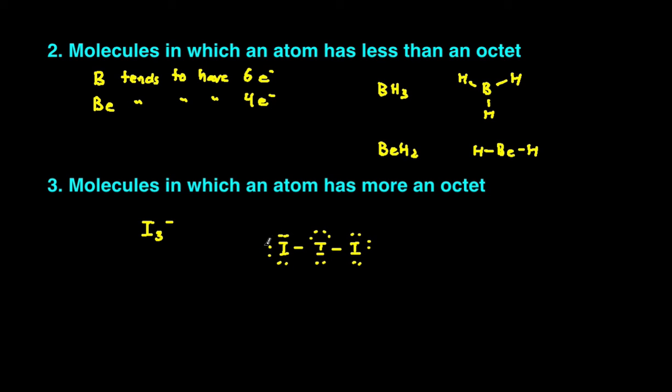And you can see that the iodine on the very end, they have eight electrons around it. But the iodine in the middle has 2, 4, 6, 8, 10 electrons around it. So this iodine has exceeded the octet rule.